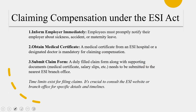When looking into the compensation claim process, first you must inform the employer immediately — this is the most critical element. Whenever there is an accident or an issue, employees must promptly notify their employer about sickness, accident, or maternity leave as required. Second, obtain a medical certificate from an ESI hospital. In case an ESI hospital is not available near your area, a designated doctor is mandatory for claiming compensation. Third, submit a duly filled claim form along with supporting documents including medical certificate, salary slips, etc., to the nearest ESI branch office. Time limits exist for filing claims.